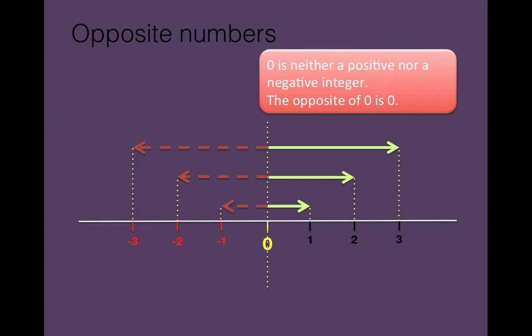Now 0 is neither a positive nor a negative integer. The opposite of 0 is 0.